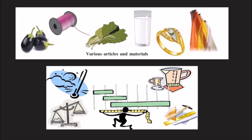Whenever we talk about a physical quantity, a value and a unit are expressed, and the magnitude is what defines the physical quantity. For example, if I say Radha walks for 3 kilometers every day, then 3 is the value, kilometers is the unit, and it is expressed in the magnitude of distance. So distance is the physical quantity.